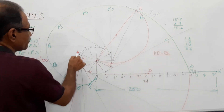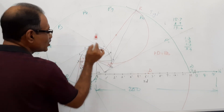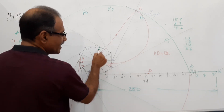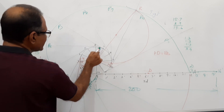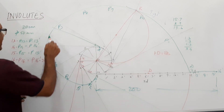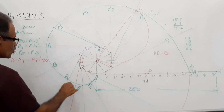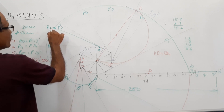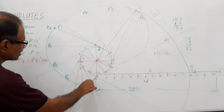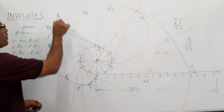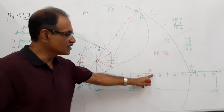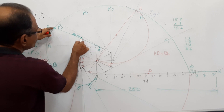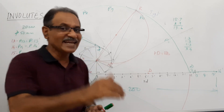Divide the circumference into 12 equal parts, divide this line also into 12 equal parts, and mark D so that Pd equals 80 mm. There are tangents at 1, 2, 3, 4, 5, 6 — but after 6 there is no tangent at 7. Instead, locate point D here and draw a tangent at D. The curve ends there. Draw the curve up to this point — it is Pd. The curve starts from here and ends here. It doesn't go to P7. This distance equals 80 mm.